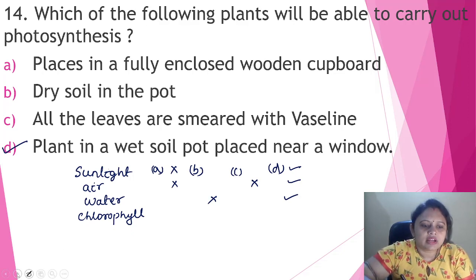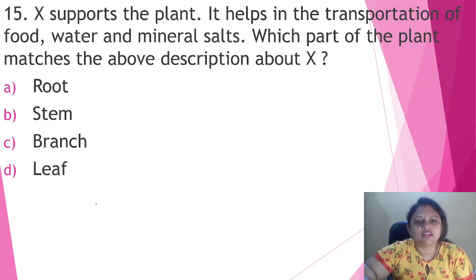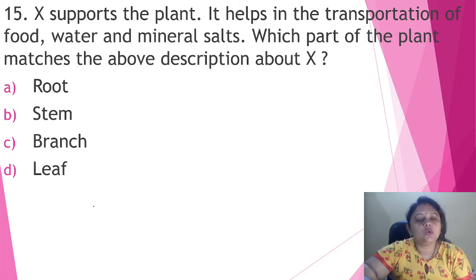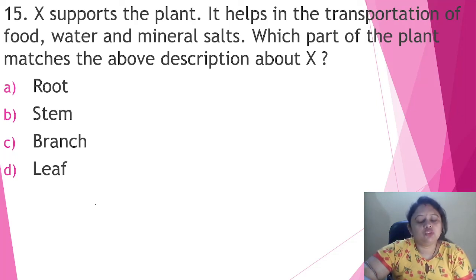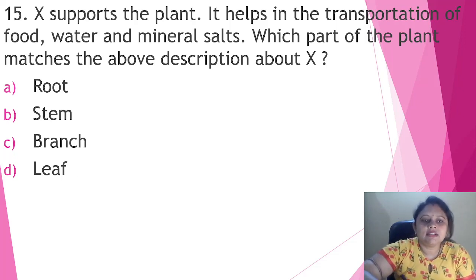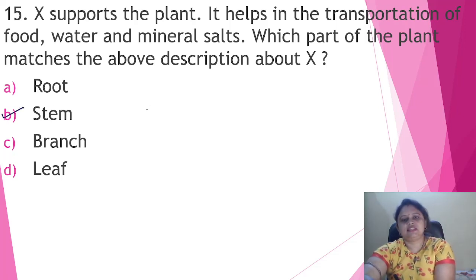The last question: it supports the plant and helps in the transportation of food, water, and mineral salts — which part of the plant matches this description? Water and minerals are absorbed by the root, but they travel to different parts of the plant through the stem. The stem also supports the plant — a weak stem means the plant cannot stand and will crawl on the ground like creepers. The correct answer is option B, that is stem.